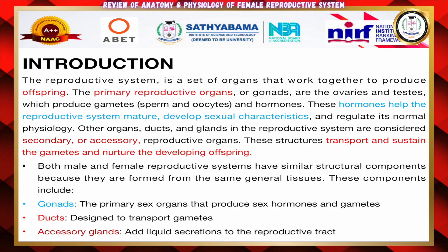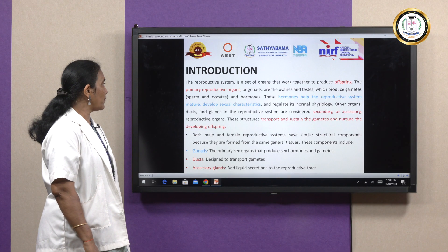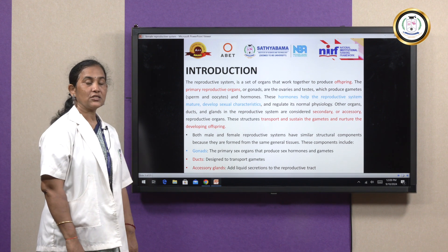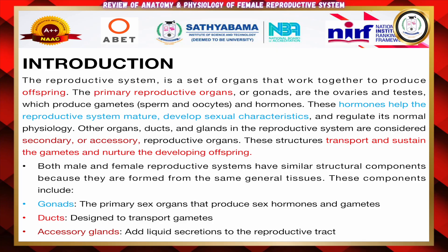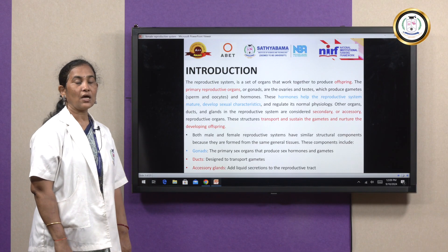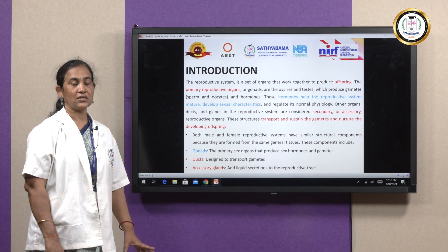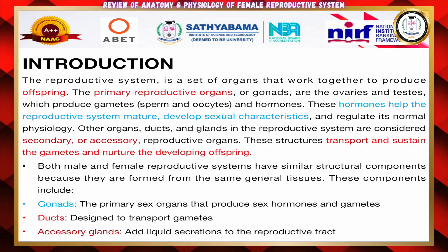The reproductive system is a set of organs that work together to produce offspring. The primary reproductive organs — that is gonads, ovaries, or testes — produce gametes, that is sperms and oocytes, and hormones. These hormones help the reproductive system mature, develop sexual characteristics, and regulate its normal physiology. Other organs, ducts, and glands in the reproductive system are considered secondary or accessory reproductive organs. These structures transport and sustain the gametes and nurture the developing offspring with the help of hormones.